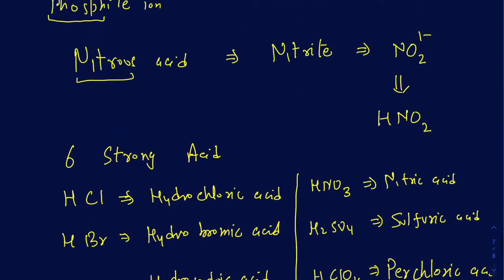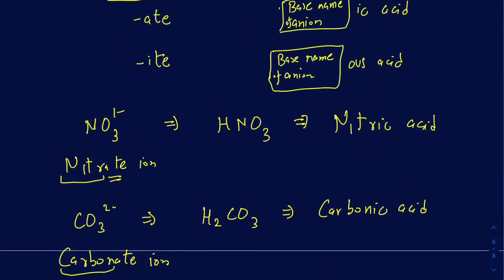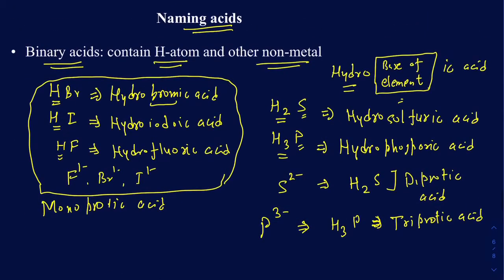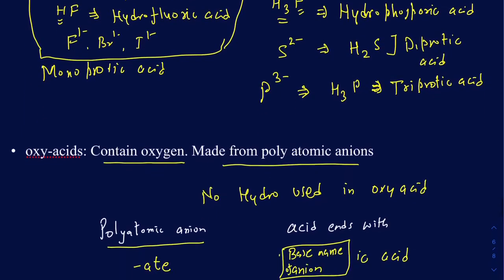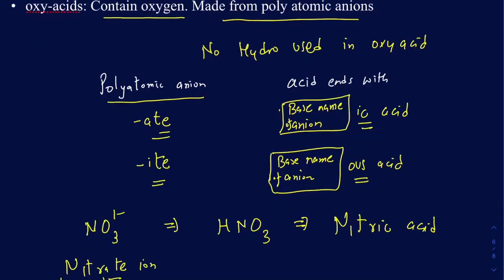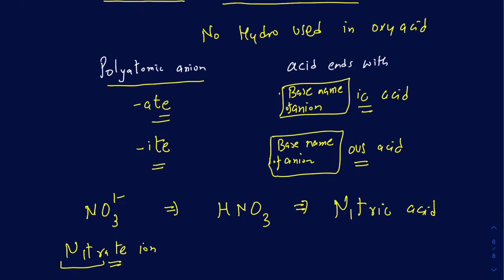To summarize: when naming binary acids, use 'hydro' and the base of the element ending with 'ic acid.' When naming oxy acids, if your anion ends with 'ate,' the acid ends with 'ic acid'; if your anion ends with 'ite,' the acid ends with 'ous acid.' Hopefully this was helpful, and I have more videos posted with examples of ionic compounds, covalent compounds, and acids.